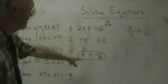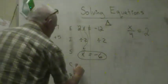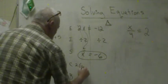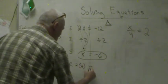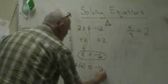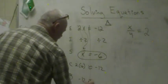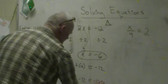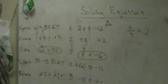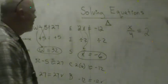Now we're going to check ourselves. We're going to put it back in. 2 times negative 6 is supposed to equal negative 12. Well, 2 times negative 6 is negative 12. Negative 12 equals negative 12. Check. We just solved it. Solving equations.